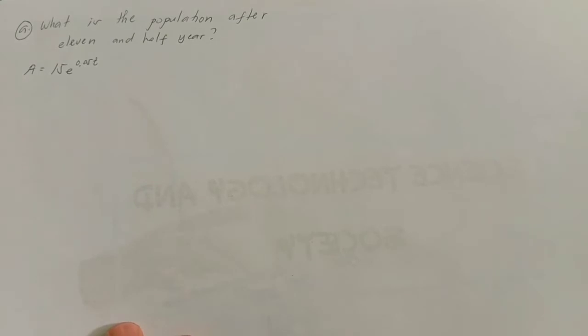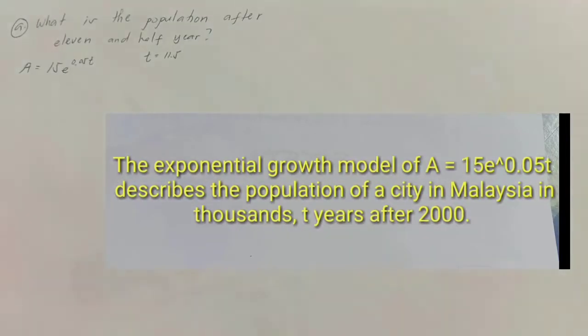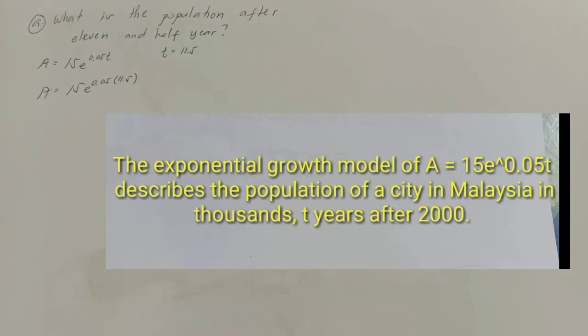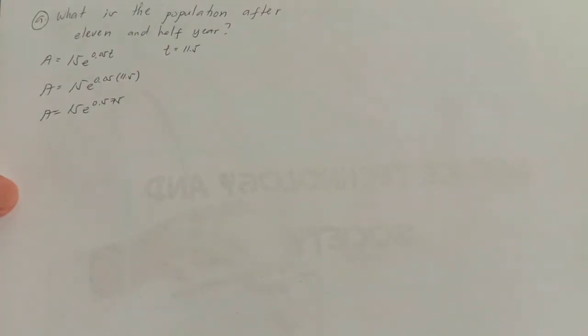We know that t equals 11.5 years. Let's substitute the value of t. We have 15e raised to 0.05 times 11.5. To make it easier, let's get the calculator and put the data. 0.05 times 11.5 equals 0.575.